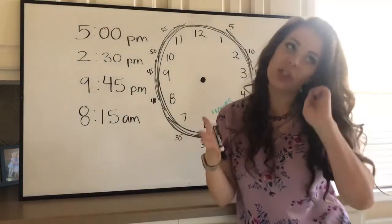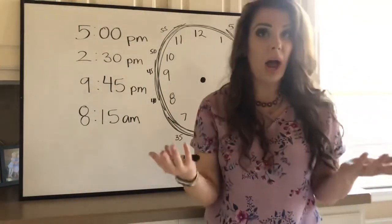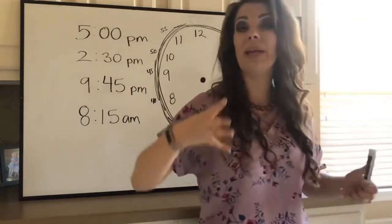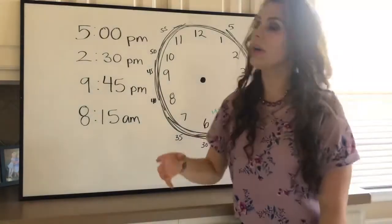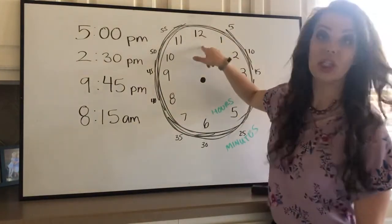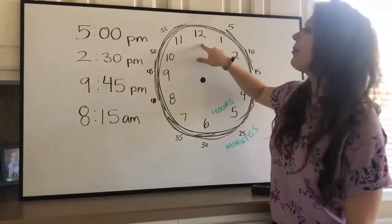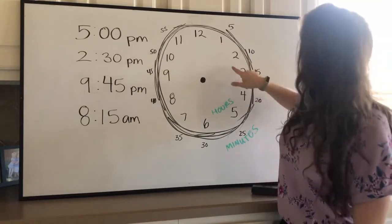So let's see, let's try it out. Now remember, our hours are right there. Those are our biggest numbers, that's our hour. That's gonna be our first number, that's our hour. So 12, is it noon or midnight? Then we have one, two, three, four, five.